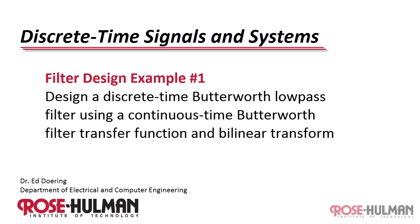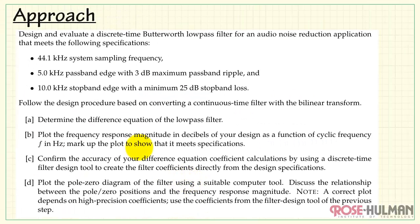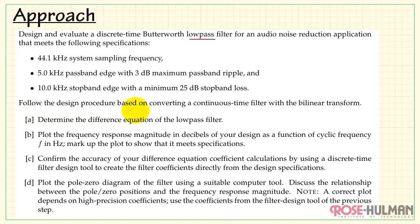This is filter design example number one. Design a Butterworth low-pass filter using the Bilinear Transform. Let's walk through a general approach to the design and evaluation of this discrete-time Butterworth low-pass filter. Specs include 44.1 kHz system sampling frequency, 5 kHz passband edge, 3 dB max ripple, and 10 kHz stopband edge with minimum 25 dB loss.